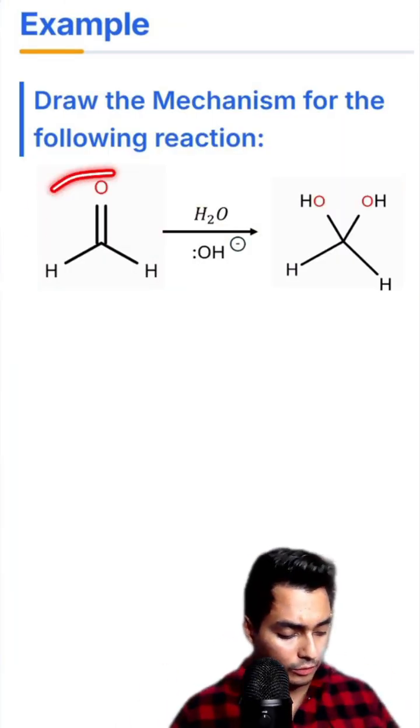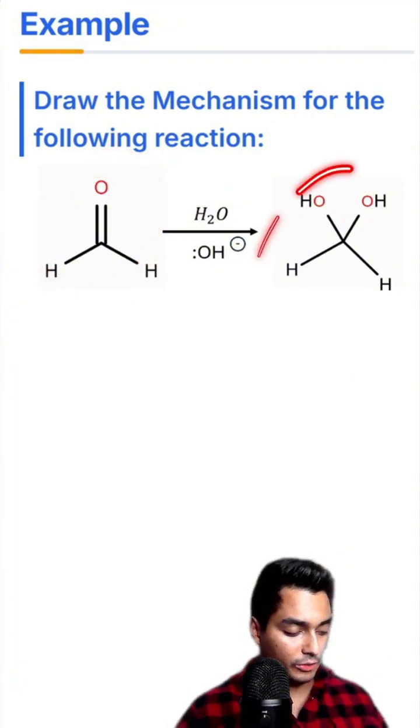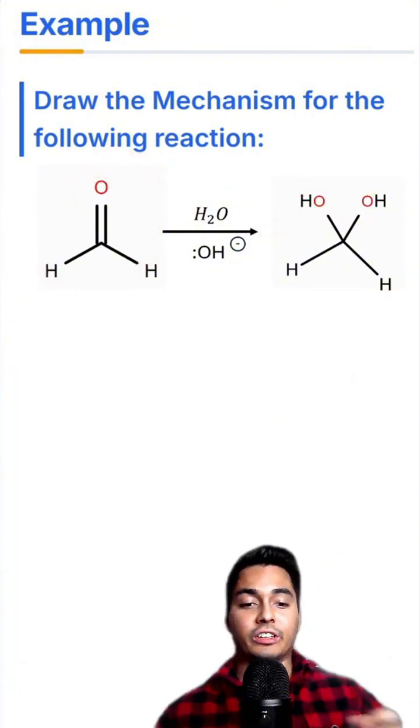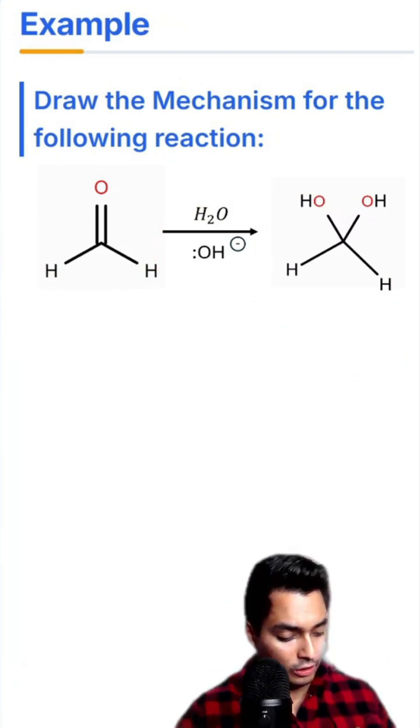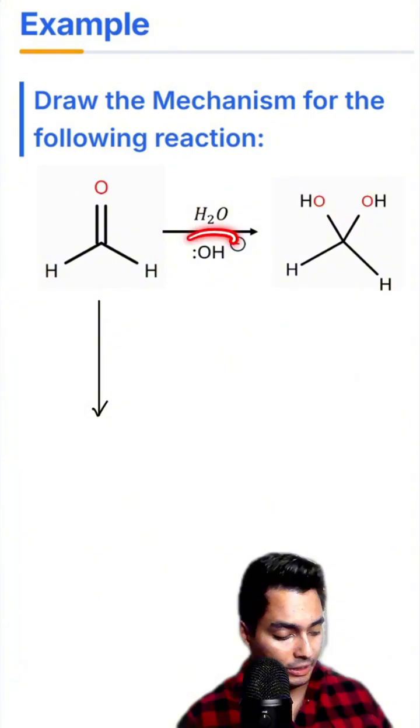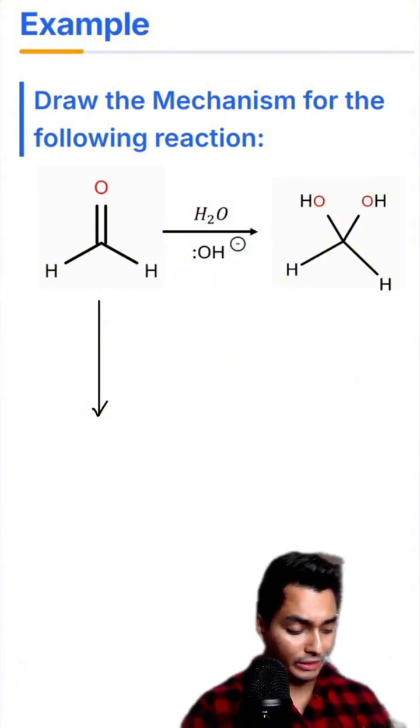Here's our first example. We're going to start with formaldehyde here and generate a hydrate. Now, is this in basic conditions or acidic conditions? Drop it down in the comments. So we got to draw the mechanism. The first step is I'm going to react with, in this case here, we have a base. That means this is under basic conditions.